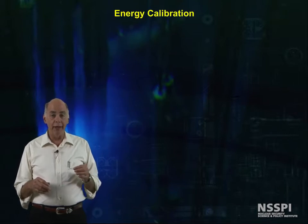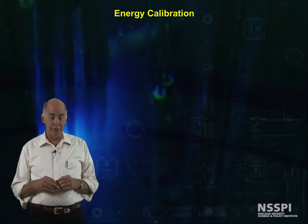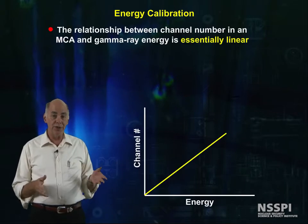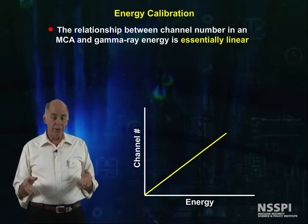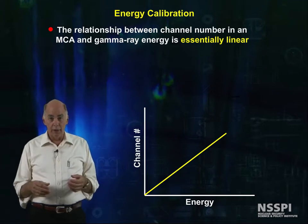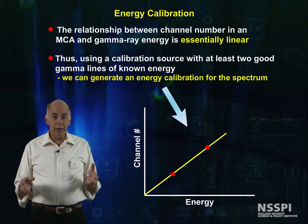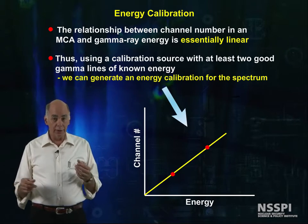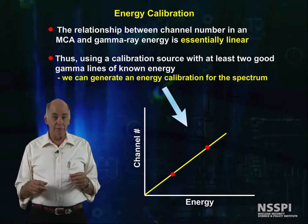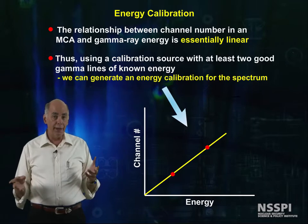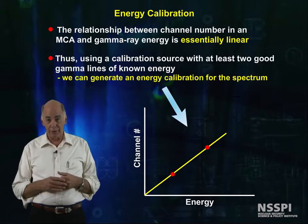Now let's talk about how you actually set up a detector to make measurements. The first thing you need to make qualitative measurements is an energy calibration. The relationship between channel number in an MCA and gamma-ray energy is essentially linear. Therefore, using a calibration source with at least two good gamma lines of known energy, we can generate an energy calibration for the spectrum.